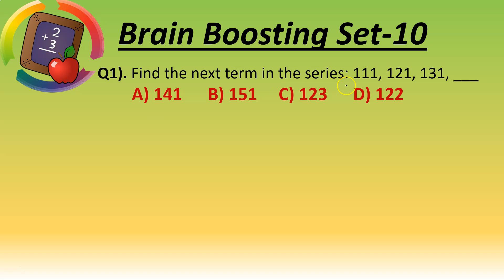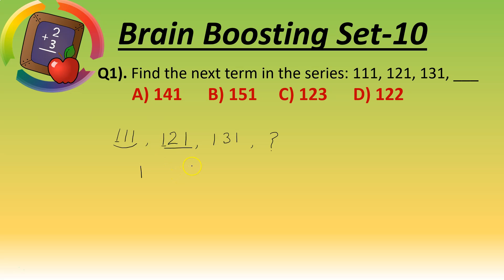Find the next term in the series: 1,1,1 / 1,2,1 / 1,3,1. Our first number is 1,1,1; second term is 1,2,1; third term is 1,3,1, and we want to find the next term. In the first term, the hundreds place number is one; in the second term, hundreds place is one; in the third term, hundreds place is also one. So in the fourth term, hundreds place number is one.